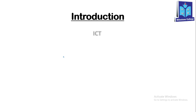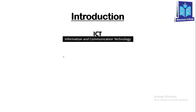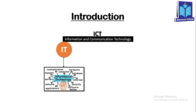Now, the introduction. What is ICT? The full form of ICT is information and communication technology. ICT has two branches. One is IT, which stands for information technology. In information technology, data collection, data processing, data security, networking, and applications are included in this part.